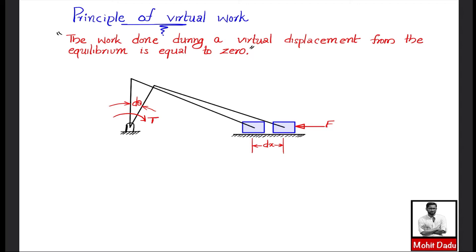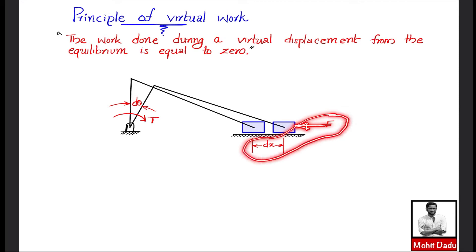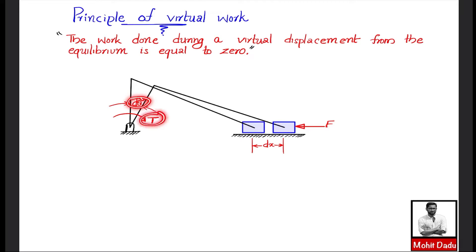To bring the system back to equilibrium, a torque must be applied in the direction opposite to the angular displacement. The work done is associated with these movements: the slider moves dx under force F, so work = F·dx (direct product, since displacement is along the force direction), and for the angular movement, work = T·dθ.